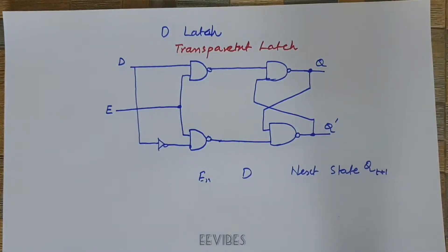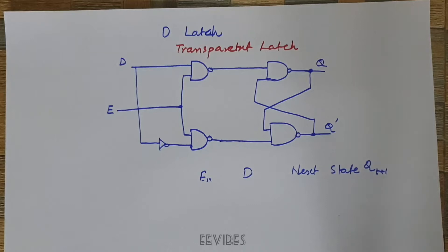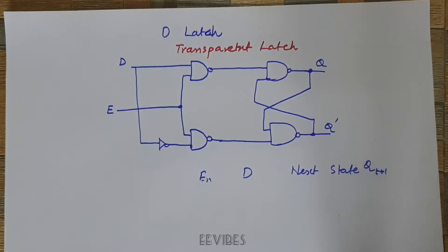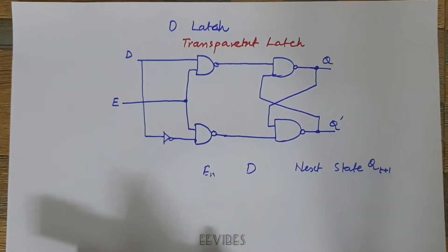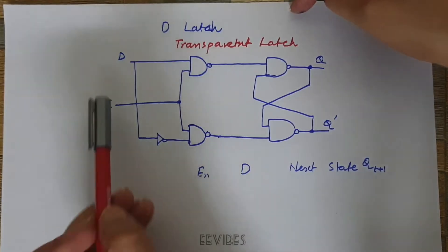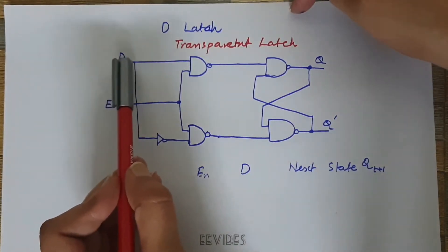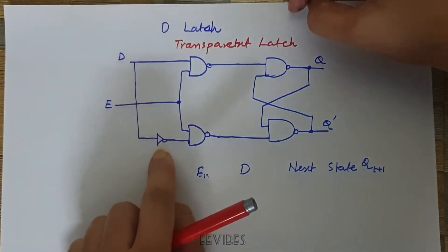We need to design this transparent latch to eliminate the undesirable indeterminate state of the SR latch. We must ensure that inputs S and R are never equal to one at the same time, because that sends the SR latch into an undefined, unpredictable, or metastable state. To avoid both inputs being one simultaneously, we use an inverter.